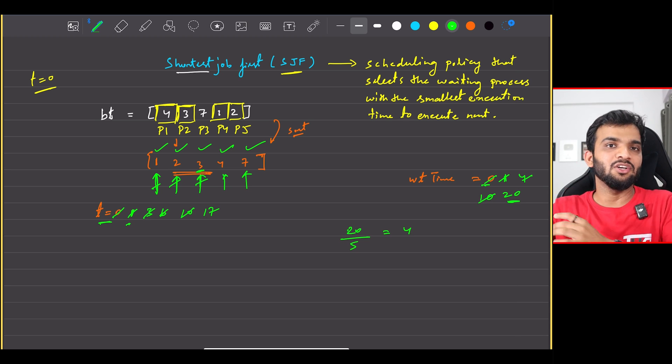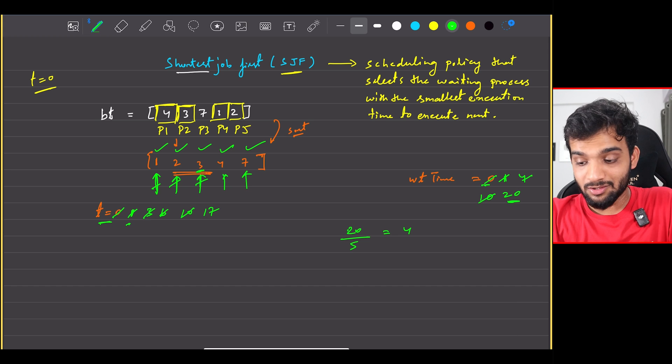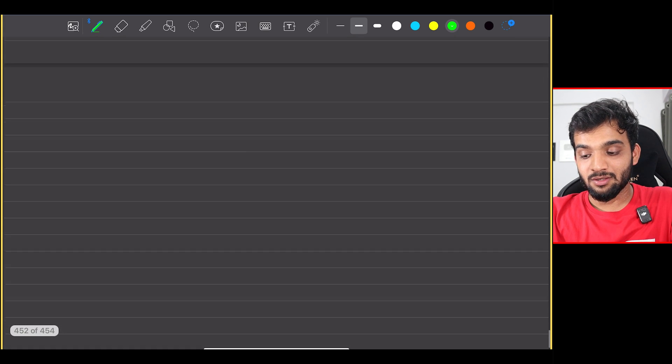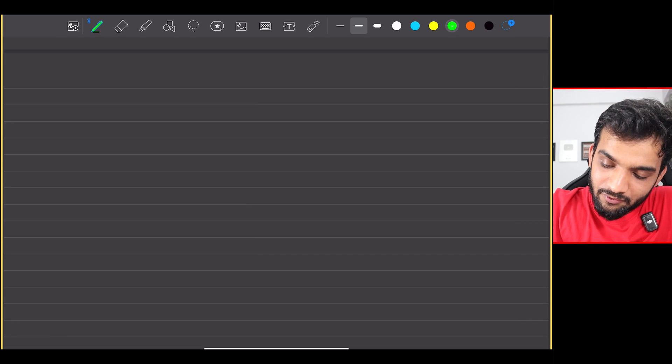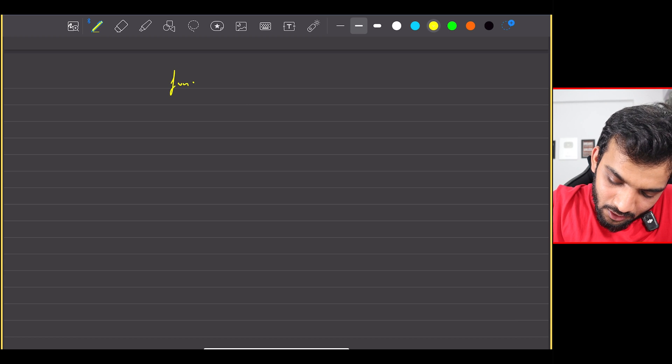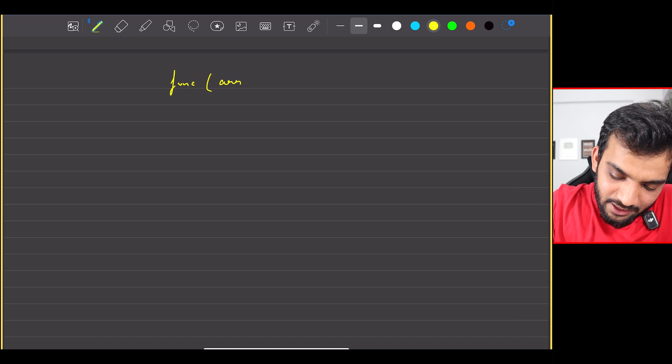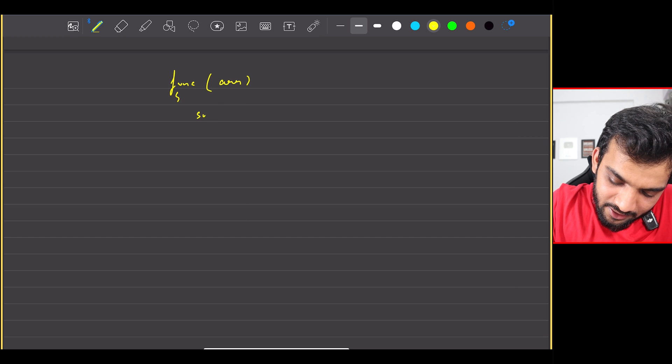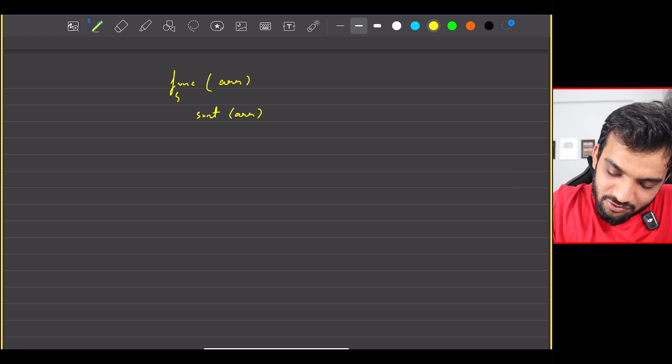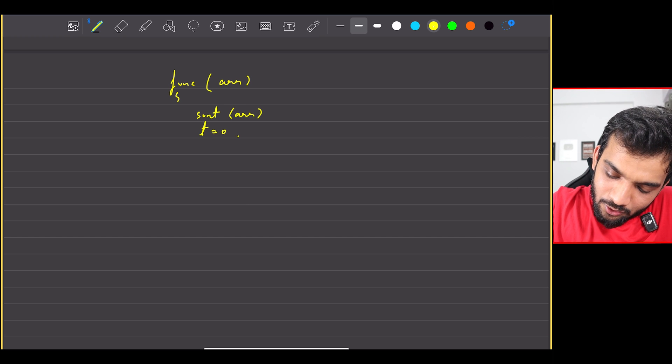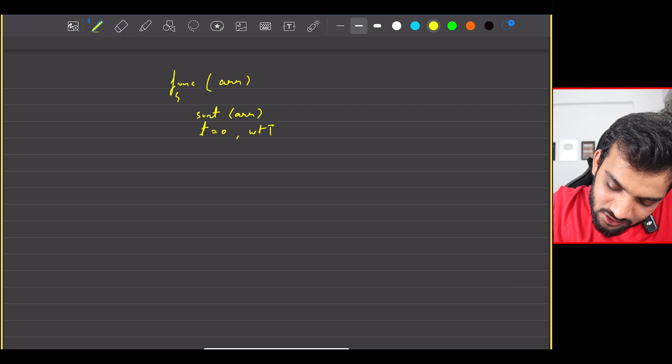Done and dusted. Super simple. Let's quickly write down the code. So it will be a function. We're given an array. Take the array. First thing we'll do is sort the array. Very straightforward.